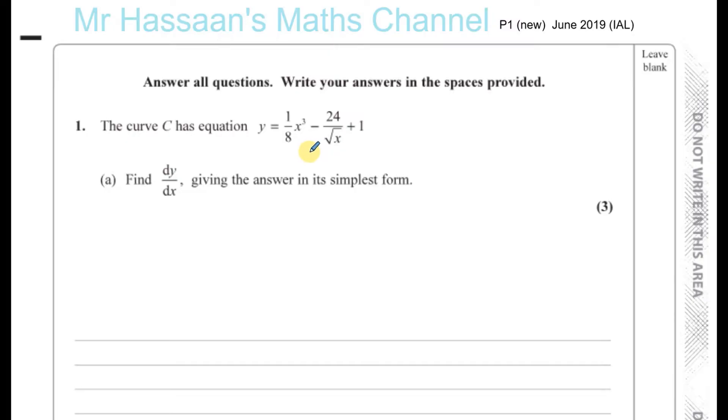Question number 1 is about differentiation. They give the equation of a curve y equals 1/8 x³ minus 24 over root x plus 1, and we've got to find dy/dx giving the answer in its simplest form. That's part A.